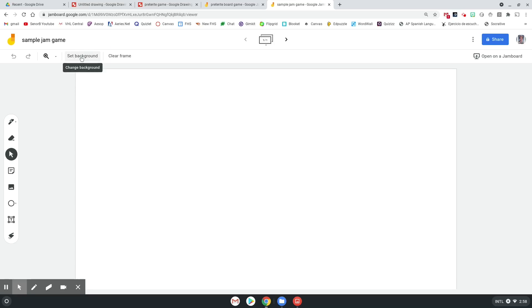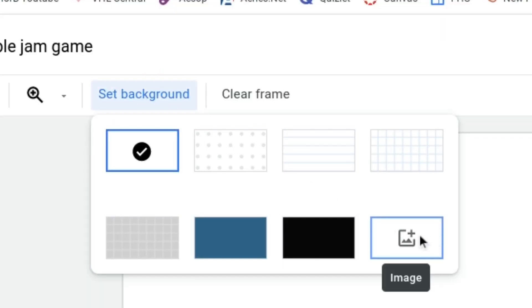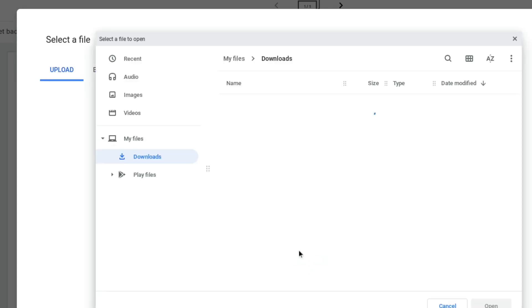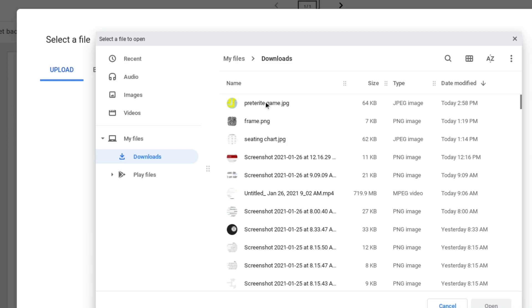All right, first step is you're going to set the background. Click the little plus button right here, image. I'm going to upload the file that I just downloaded, which happens to be the most recent one on my computer here, which makes it easy. Click Open.